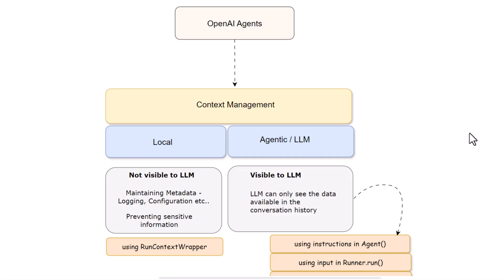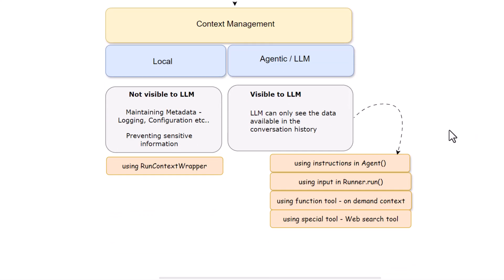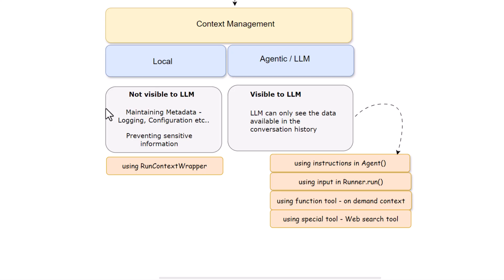What's the difference between these two context management types? When we talk about local context management, all the information we are passing in a local context is not going to be visible to LLM. This context management is beneficial for maintaining metadata like logging, configuration, or certain dependencies that we do not want to pass to LLM but are required for your application.